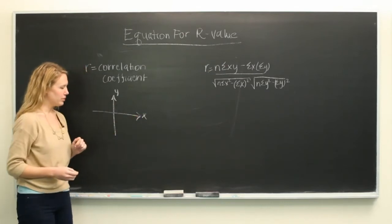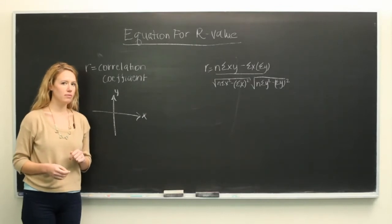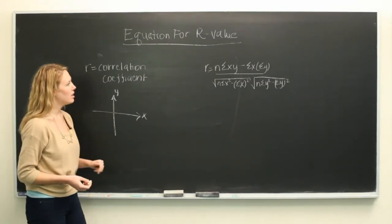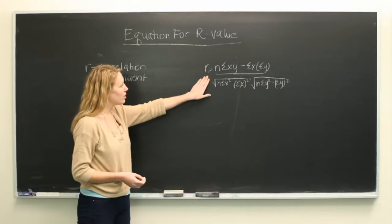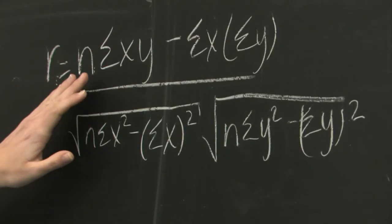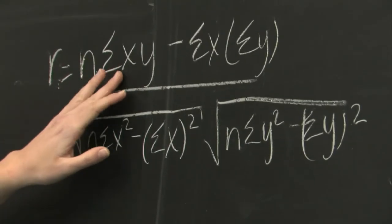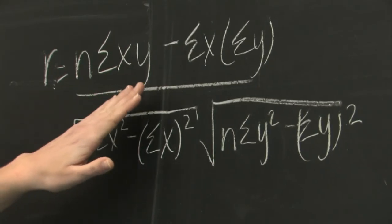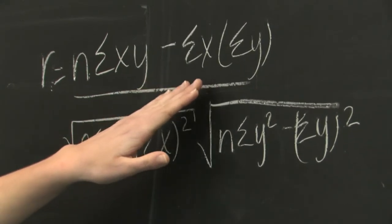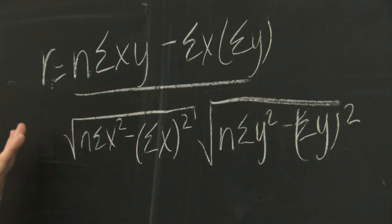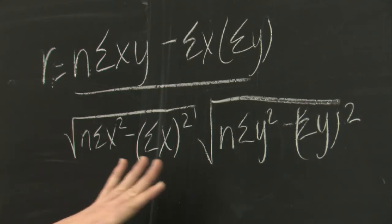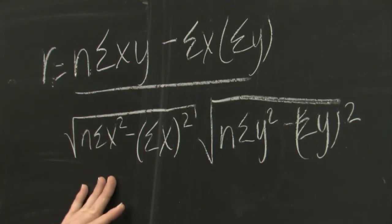So the equation for r is actually very complex. I have it written here on the board and it is n times the sum of x times y minus the sum of x times the sum of y divided by these two products, the first being the square root